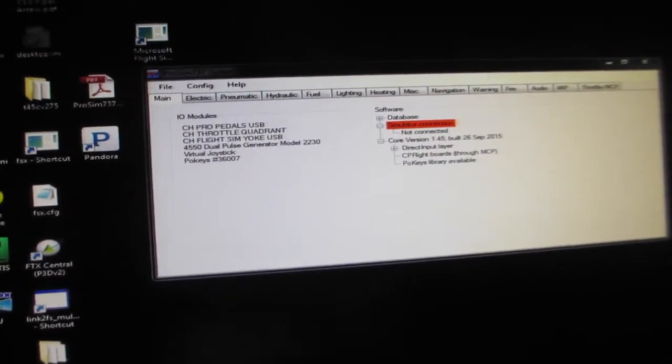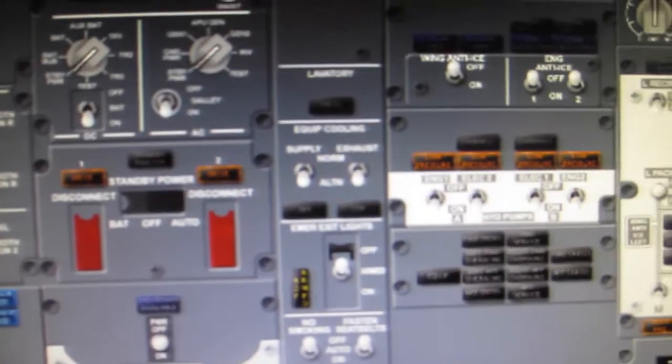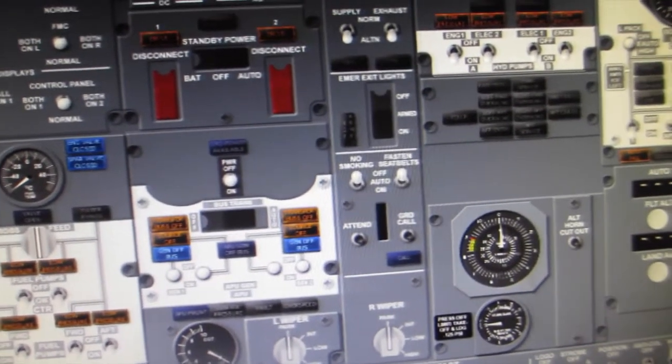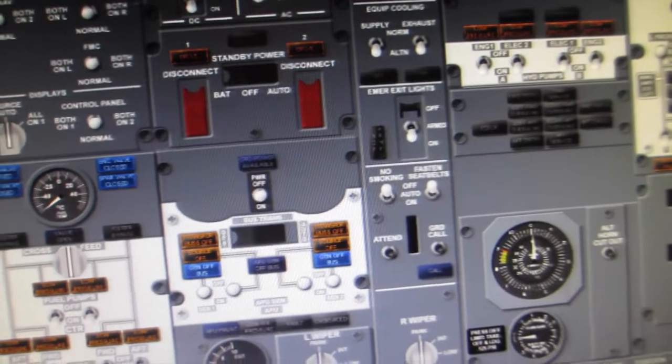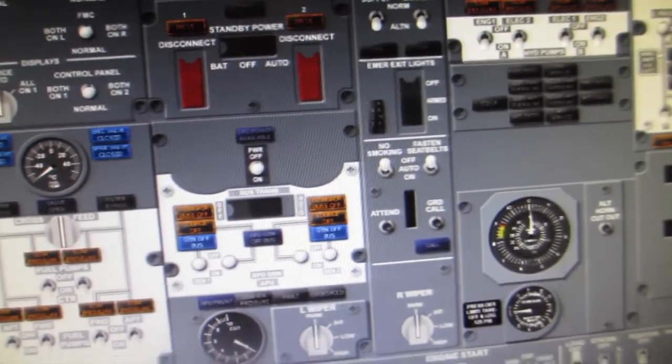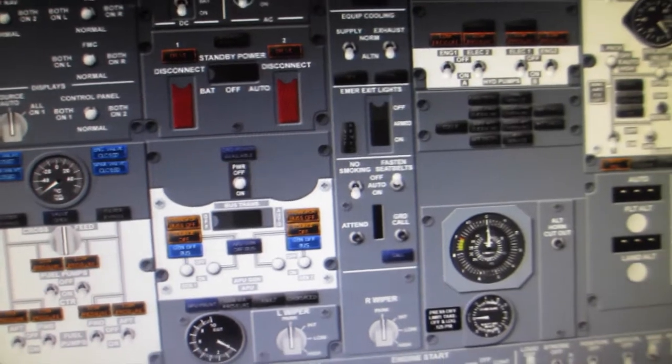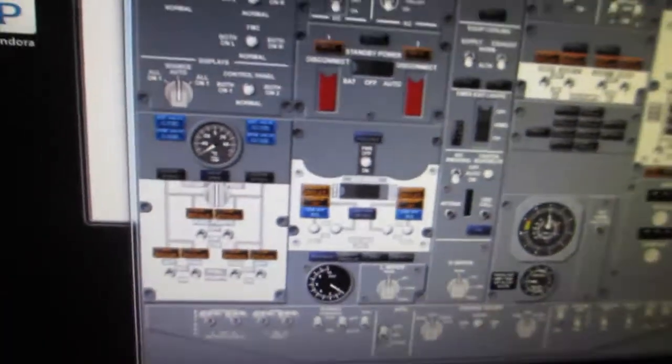And now we can come into the panel and we can test this stuff out. So I'm going to do the equipment supply, there we go. Oh I got those reversed, there was no label one or two, so I'll just go in there and reverse those. Emergency lights, on armed and off. Oh, something's not right there, I'll fix that. No smoking on auto off, seatbelts off auto on. Looks like that works alright.